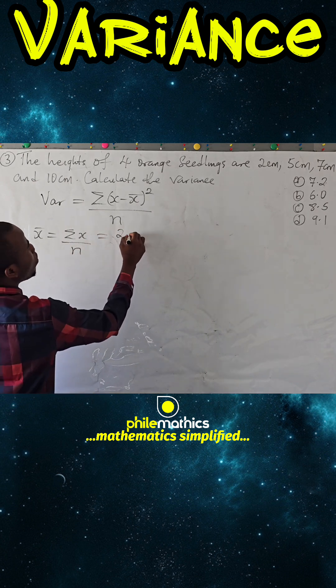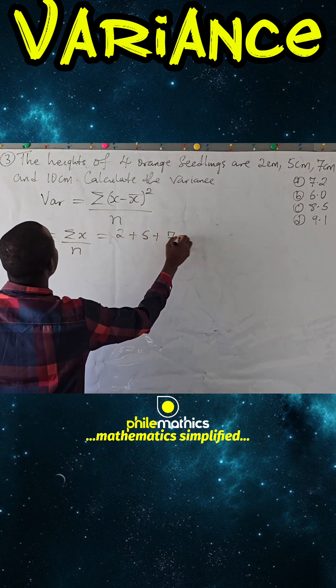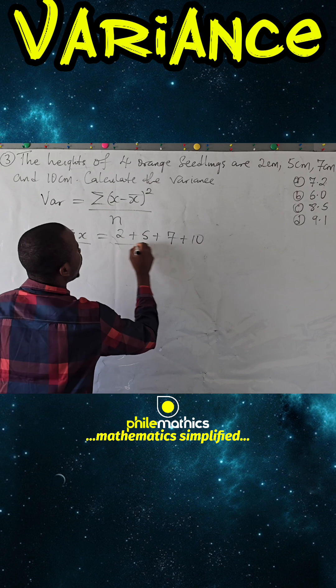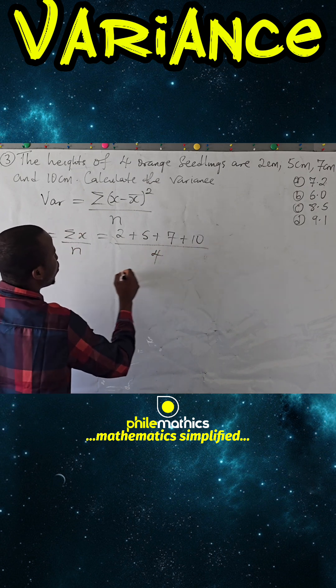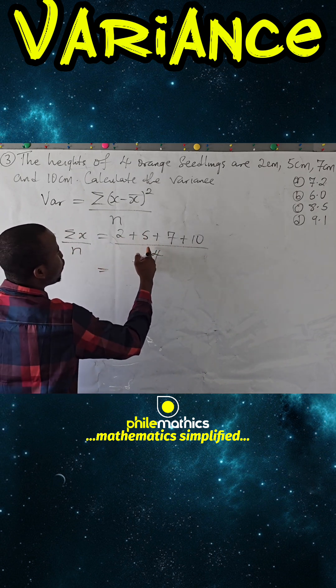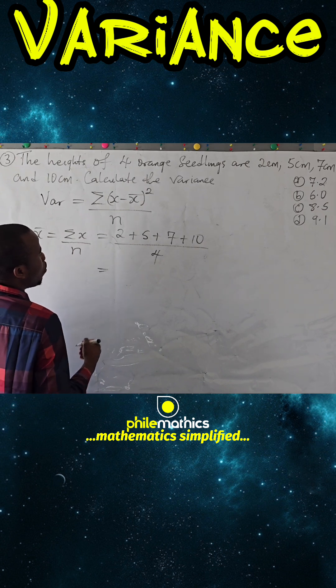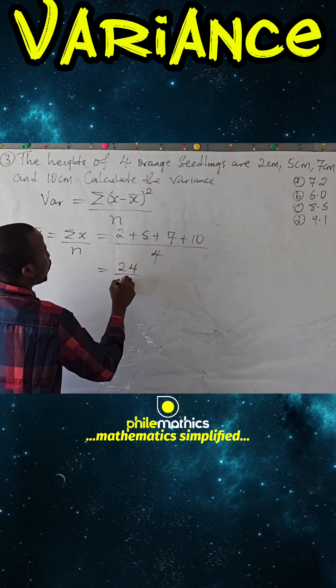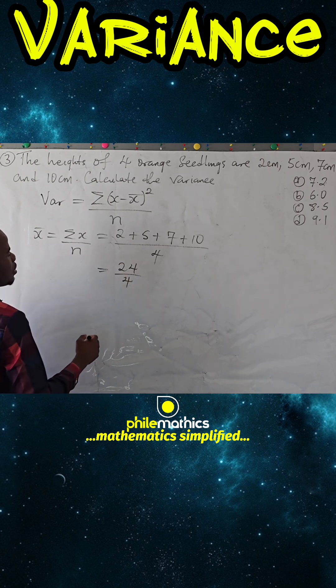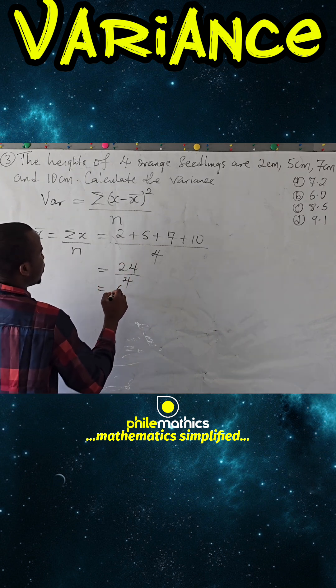Which is 2 plus 5 plus 7 plus 10 over 4. 2 plus 5 plus 7 plus 10 is 24 over 4, which divides to give us 6.